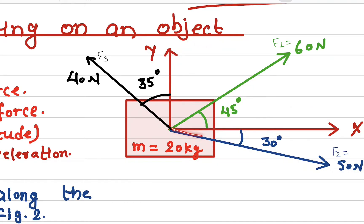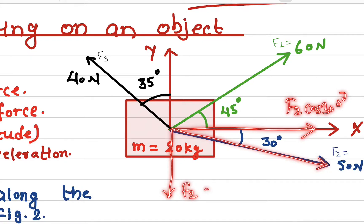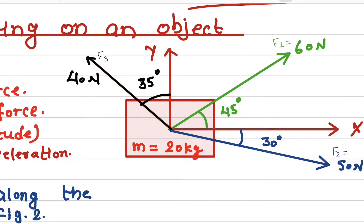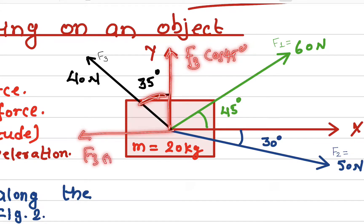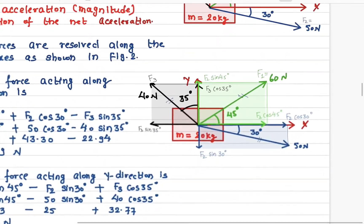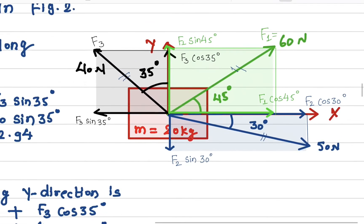The same way, we can resolve F2 into two components: F2 cosine 30° along x, and F2 sine 30° along y — in this case the force will be downward. For F3, the component along the x-axis will be F3 cosine 35°. Remember the rule: the component closer to the angle is always cosine. The component further from the angle is sine, so the y-component is F3 sine 35°.